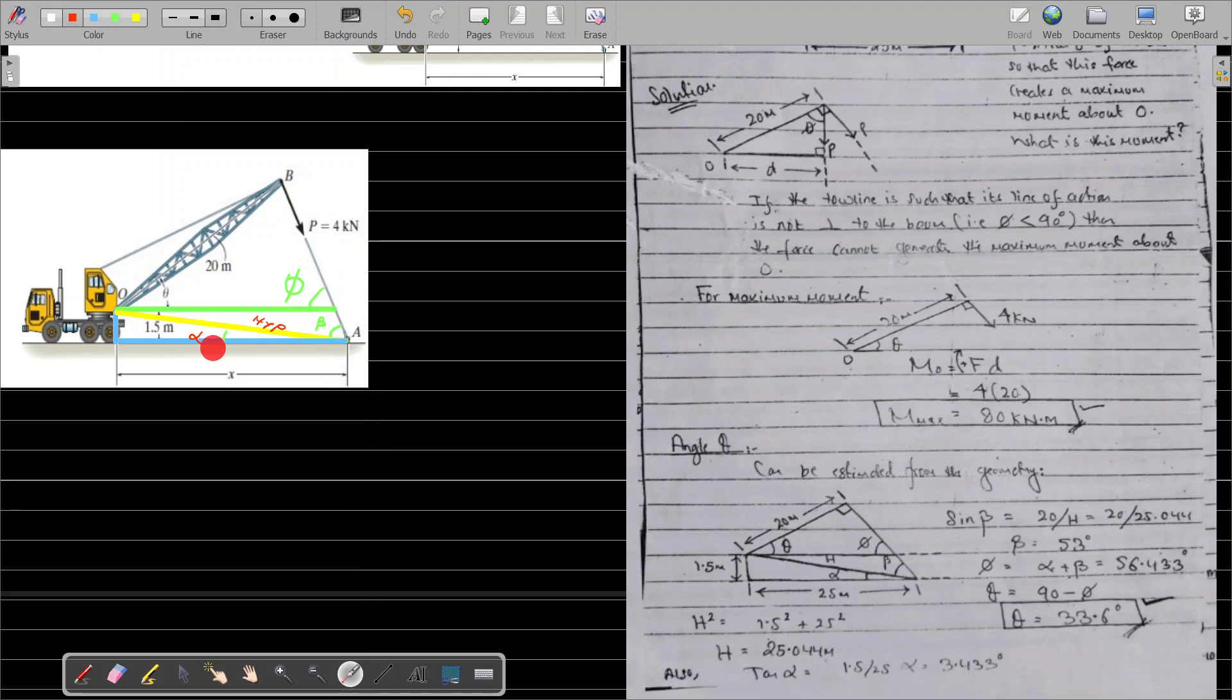Our next target is to calculate beta. If we add alpha with beta, we will get phi. If we get phi, since we know this angle is 90 degrees, we can get theta. First target is to calculate beta. This is a right angle triangle with angle beta and length 20 meters.